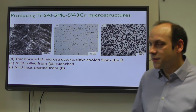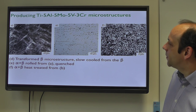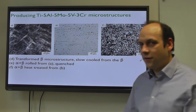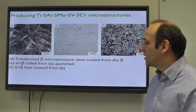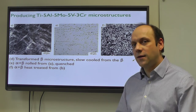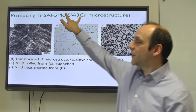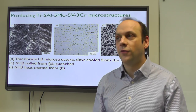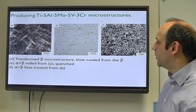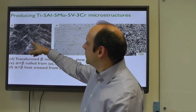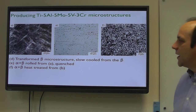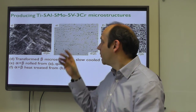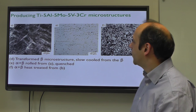Turning to some different microstructures - this alloy Ti-5-5-5-3 has a molybdenum equivalent of more than 10, meaning you can very nearly retain an entirely beta microstructure on quenching. It's used for landing gear in the 787 and A350 - a very tough, very strong 1400 MPa alloy when aged correctly. If you slow-cool it from the beta you get a transformed beta microstructure. If you then roll it high in the alpha-beta field with just a little bit of alpha and then quench it, you can retain only that small amount of alpha that was present at the rolling temperature.